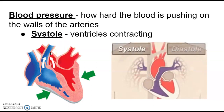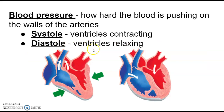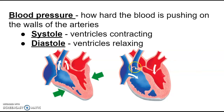We also have diastole, which is when the ventricles are relaxed and filling up with blood. Because they're filling up, the semilunar valves are shut and no blood is flowing into the arteries. So there's not going to be high pressure in those arteries. When the ventricles are relaxed, there's not very high pressure — if we were to take blood pressure during diastole, it would be a lot lower.